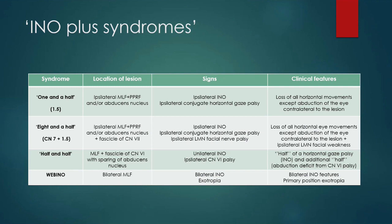Because of the location of the medial longitudinal fasciculus relative to surrounding adjacent structures and its complex nature, patients with INO can sometimes have additional brainstem signs if other adjacent structures are involved. This collection of symptoms and signs is referred to as INO-plus syndromes. Here are a couple of examples of such syndromes.